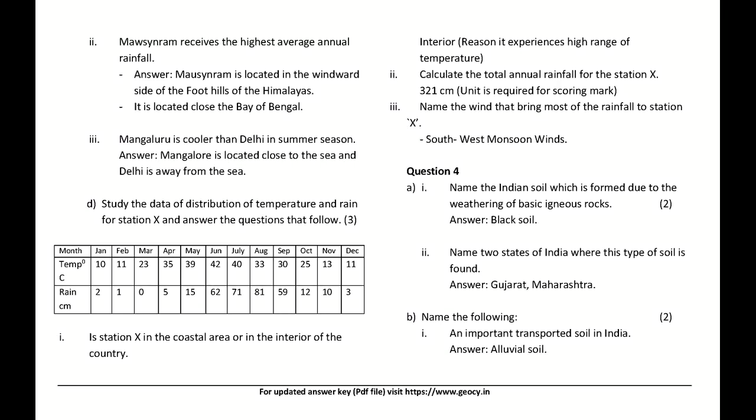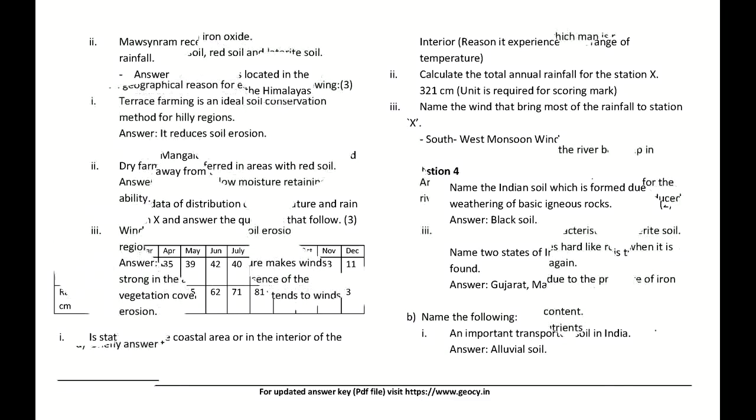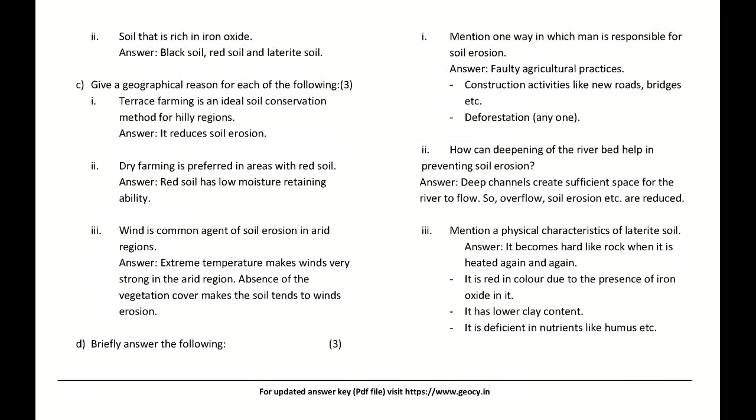Name an important transported soil in India. Answer: Alluvial soil. Calculate the total annual rainfall for station X. Answer: 321 cm — the unit is required for scoring the mark. Name the wind that brings most of the rainfall to station X. Answer: Southwest monsoon winds.